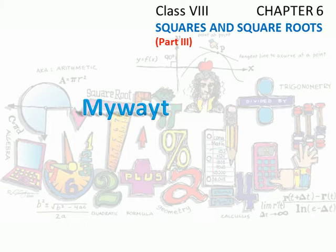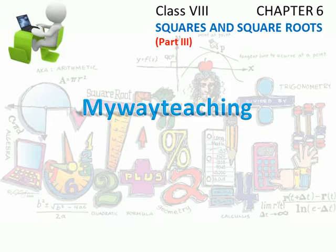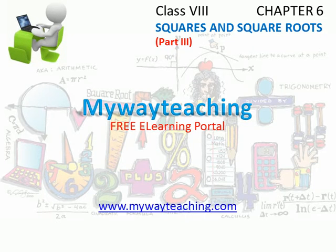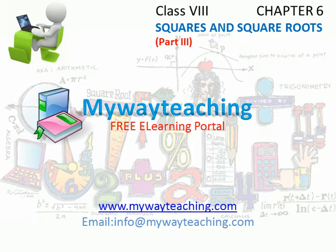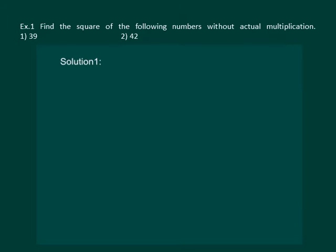Hello friends! This video is brought to you by MyWayTeaching.com. Let us read the question. Find the square of the following numbers without actual multiplication. We have to find the square of 39 and 42.